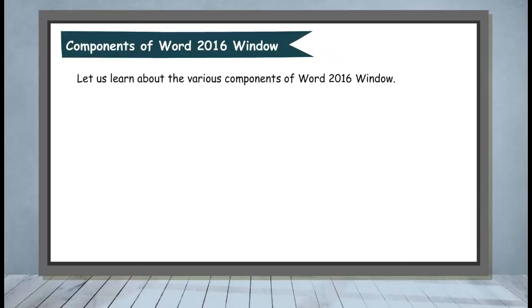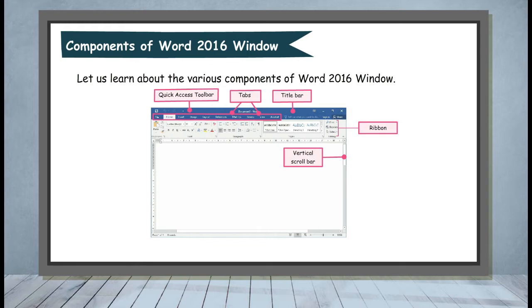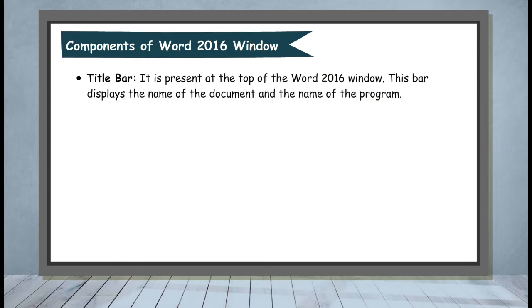Components of Word 2016 Window. Let us learn about the various components of the Word 2016 window. The main components are: Quick Access Toolbar, Tabs, Title Bar, Ribbon, Vertical Scroll Bar, Document Area, Status Bar, Horizontal Scroll Bar, and Zoom Slider.